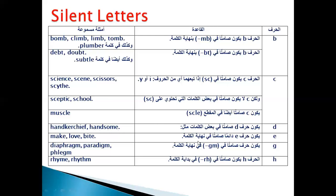هنتكلم عن حرف E في الـ vowels بعد كده. حرف E بييجي في آخر الكلمة — انساه، ولكنك شايفه. انطاقه زي ما تسمع الكلمة، like make, love, bite — ولكنه موجود. بالنسبة لـ G-M اللي بييجي في نهاية الكلمة، حرف G بيكون silent letter، زي diaphragm, paradigm, phlegm.